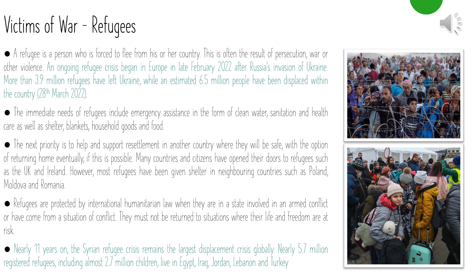Refugees must not be returned to situations where their life and freedom are at risk. The Syrian refugee crisis remains the largest displacement crisis globally — nearly 5.7 million registered refugees, including almost 2.7 million children, live in Egypt, Iraq, Jordan, Lebanon and Turkey.